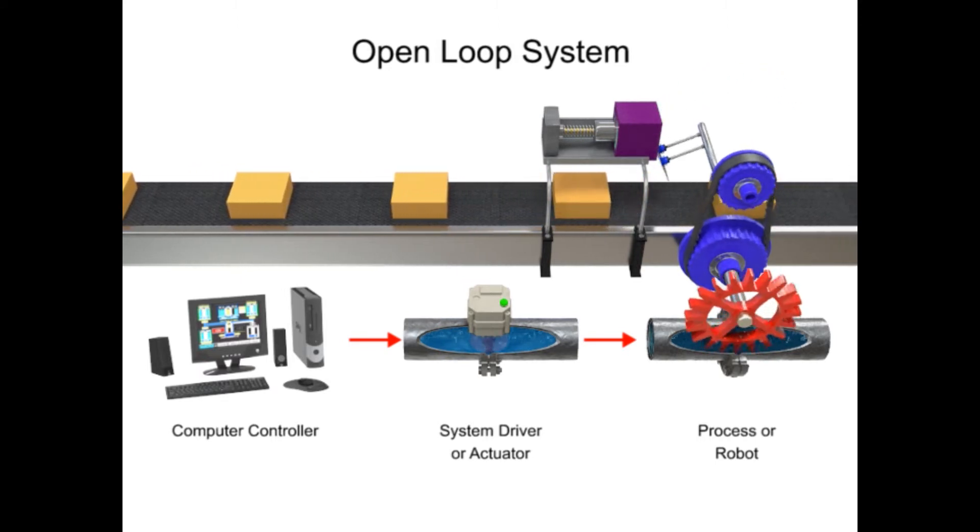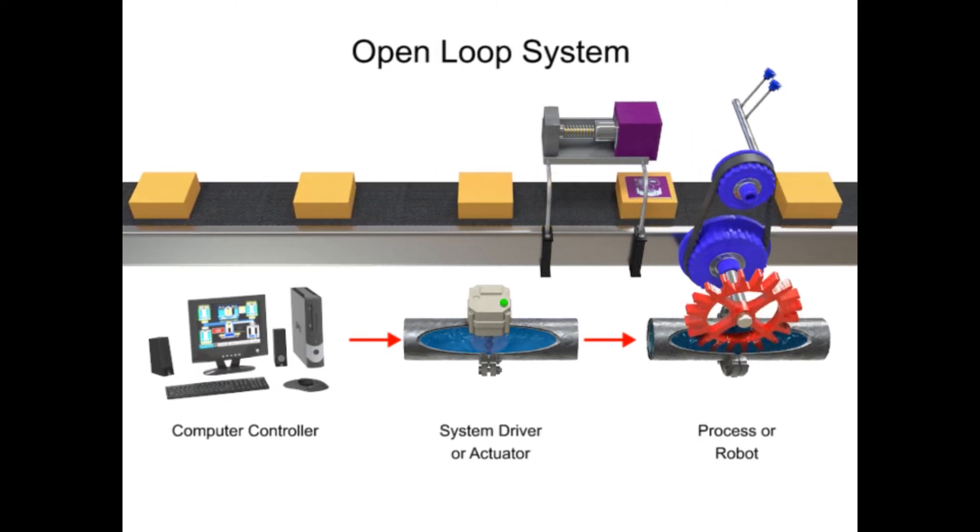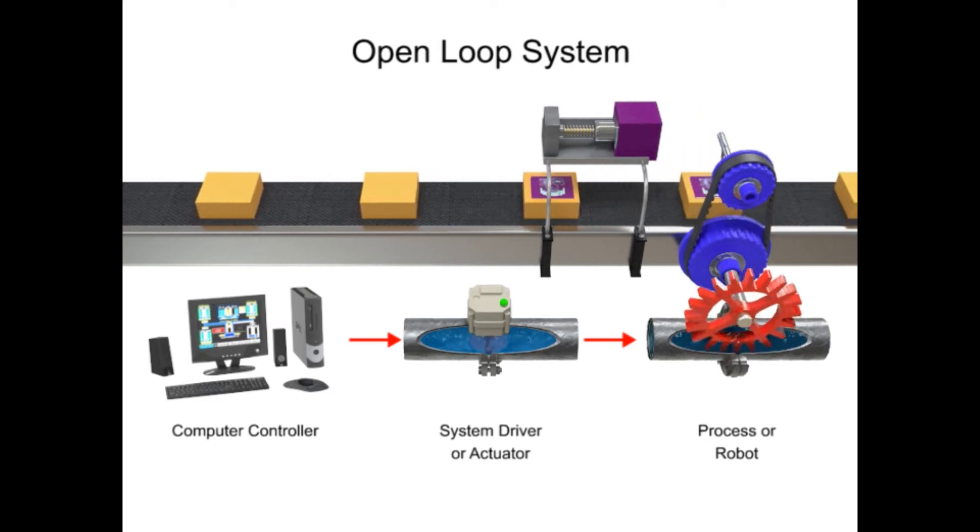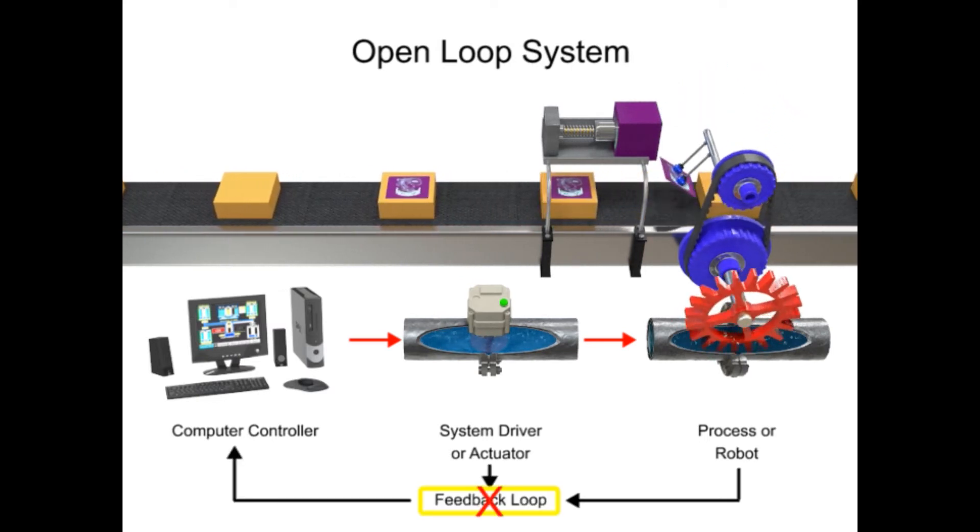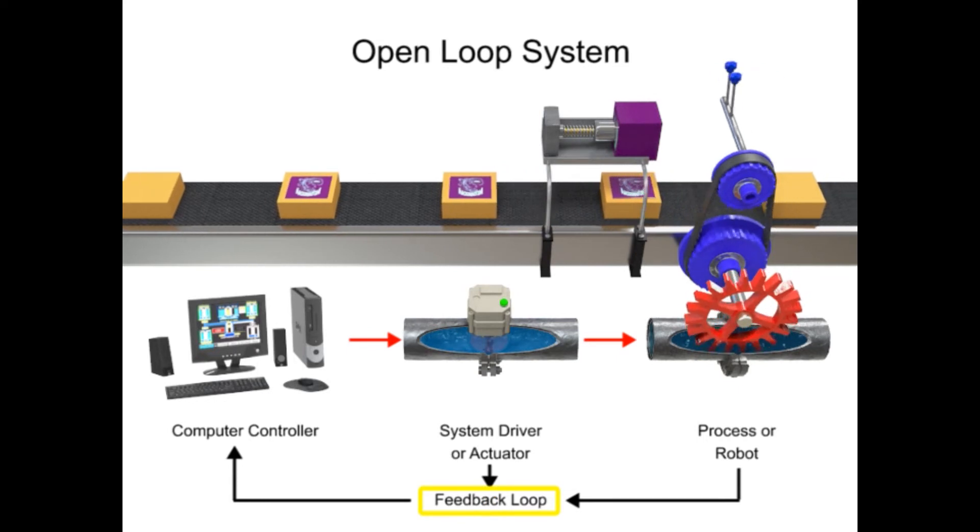In an open-loop system, the signals that go from the computer to the system driver to the robot are never checked with a feedback loop to ensure that the robot has completed its task.